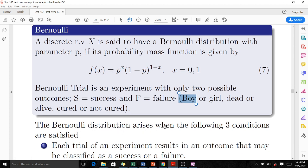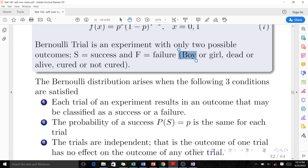The Bernoulli distribution arises when the following three conditions are satisfied. The first one is each trial results in an outcome that may be classified as a success or a failure. The second says that the probability of success is the same for each trial, so it doesn't change.